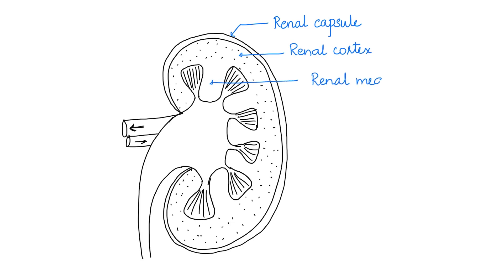The inner tissue that contains the triangular structures is the renal medulla. These triangular structures are called renal pyramids and the tissue between the pyramids is called the renal column. The tip of the pyramid is the renal papillae.